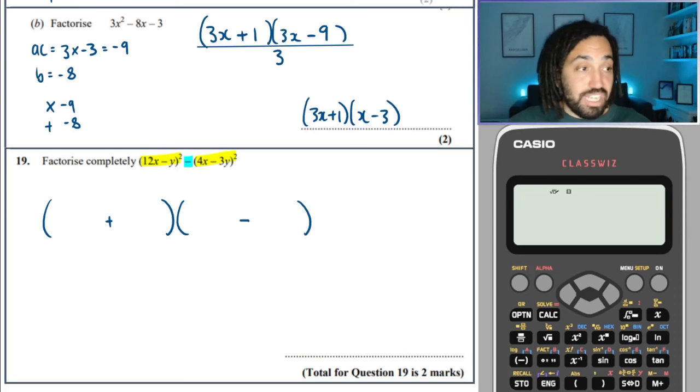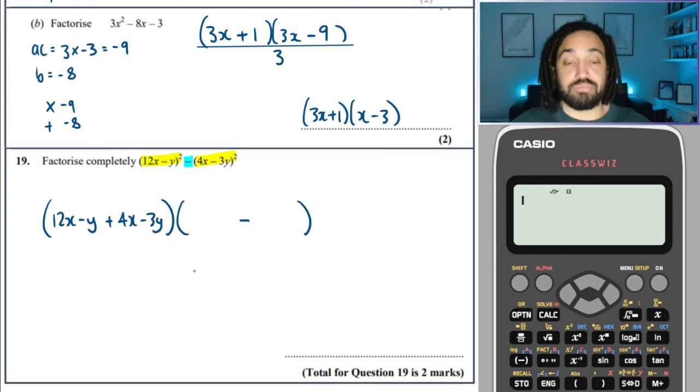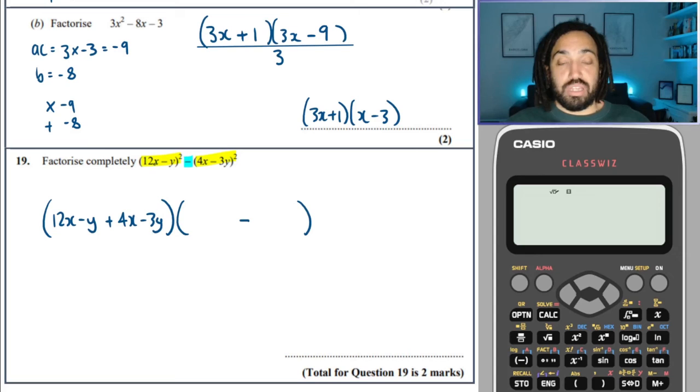The square root of this left-hand bracket, well, it's a square bracket. So the square root is just literally what is inside that bracket, which is 12x minus y. And over here, what's the square root of that? Well, just take the squared away. It's 4x minus 3y. Over here, again, it's the same thing. 12x minus y. And here is 4x minus 3y.